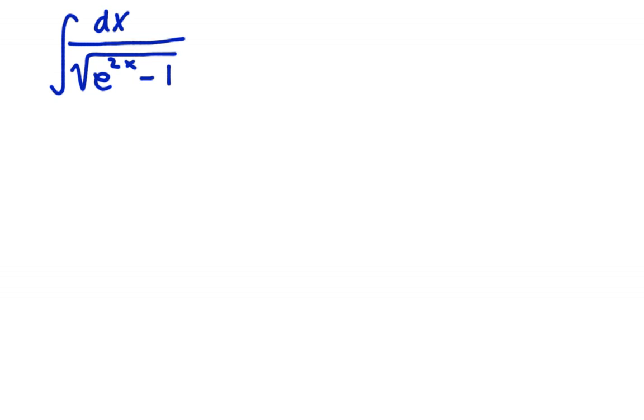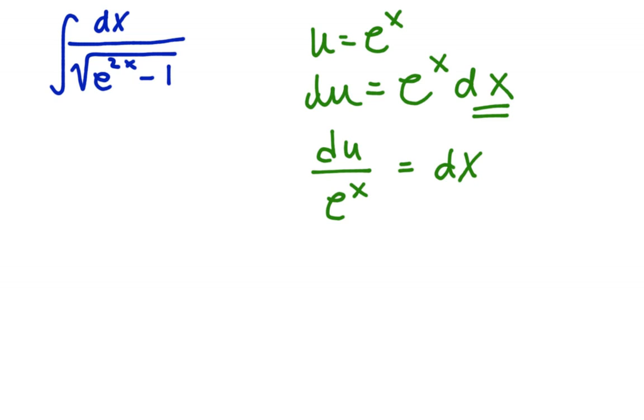So let's just start doing some substitution. Let's say u is equal to e to the x. Because when I square that, I get e to the 2x. So that means du would be equal to e to the x dx. So if I am to substitute for dx, I would need an e to the x there. Or I could say du over e to the x is equal to dx. So let's see what this looks like. And then a, let's write a is equal to 1.